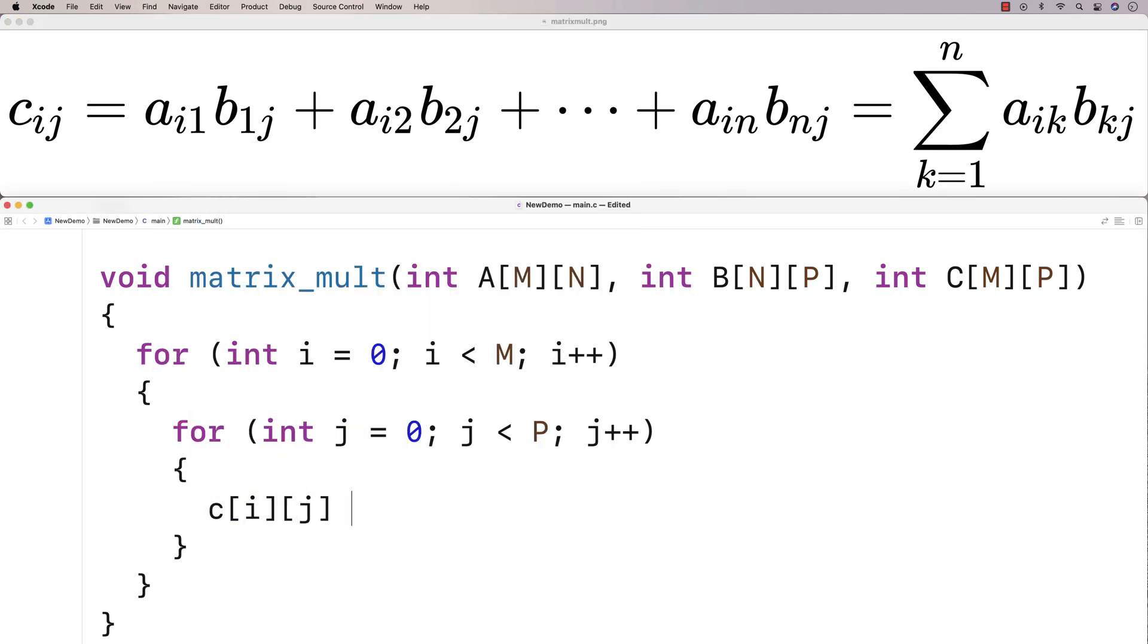Because then what we can do is after carrying out each multiplication and addition necessary to compute the value of C at the i-th row and j-th column is we can just add it to C[i][j].